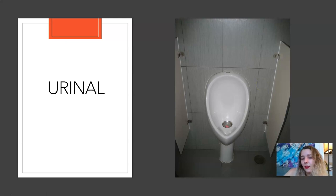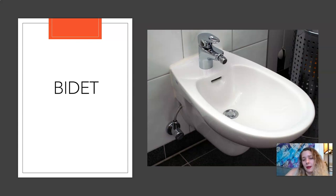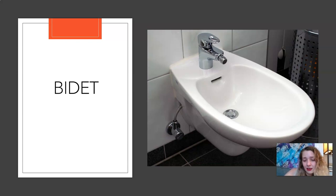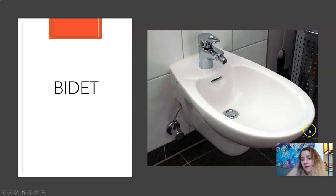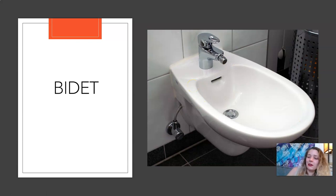Urinal. You can pee standing up in a urinal. Urinal. Bidet. A bidet is an alternative to toilet paper — it lets you wash downstairs. Bidets aren't very common in the United States, but they are becoming more common. You can even have a bidet attached to your toilet. This is a separate bidet, so you would have this and a toilet. But you do not go to the bathroom in a bidet — no pee or poo poo in the bidet, please.